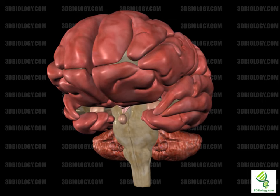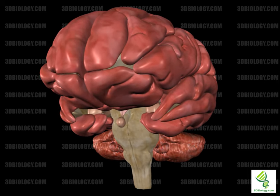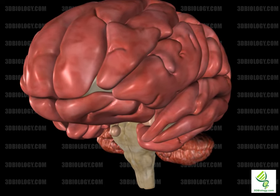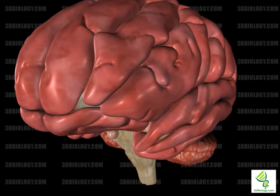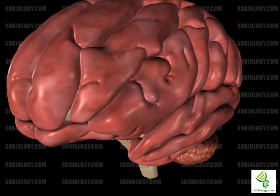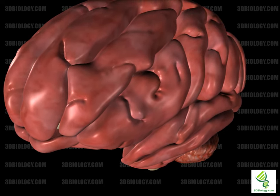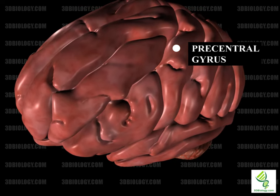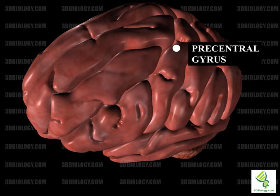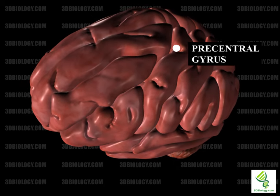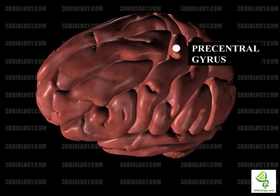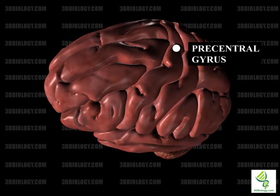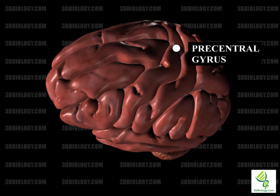The precentral gyrus is Brodmann area 4. It is located at the rear of the frontal lobe, just before the central sulcus. It has a diagonal orientation and is continuous with the postcentral gyrus. It is the location of the primary motor cortex, involved in the execution of voluntary motor movements and skeletal muscles.